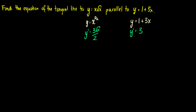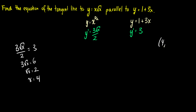Since we want the tangent line parallel to y equals 1 plus 3x, the slopes must be equal, so our y primes have to equal each other. That gives us 3√x over 2 equals 3, so 3√x equals 6, meaning √x equals 2, so x equals 4. Now we find the y value: y equals 4 times √4, which is 4 times 2, which is 8. So we're looking at the point (4, 8) with slope 3.